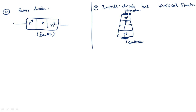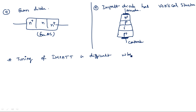To run the IMPATT diode, relatively high voltage is required as stated earlier. Another important point is that tuning of the IMPATT diode is difficult compared to the Gunn diode. Tuning means producing different frequencies — getting different frequencies is easy in the Gunn diode, but difficult in the IMPATT diode. These are the differences between the Gunn diode and the IMPATT diode. Thank you.